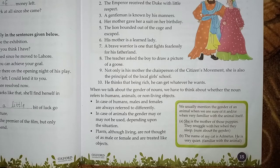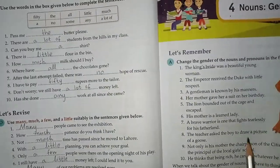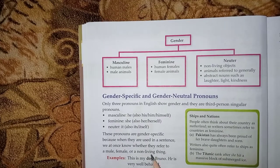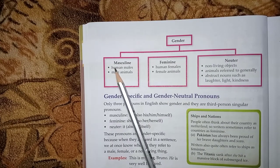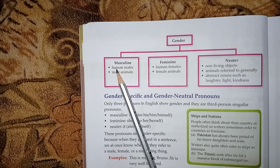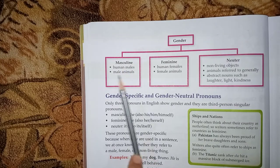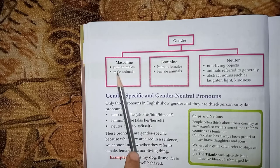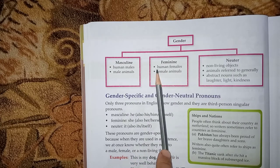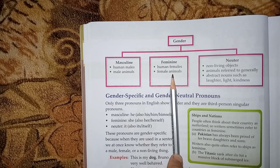Okay students, coming to page number 16. Gender categories: first, Masculine — referring to human males or male animals. Second, Feminine — referring to human females or female animals.